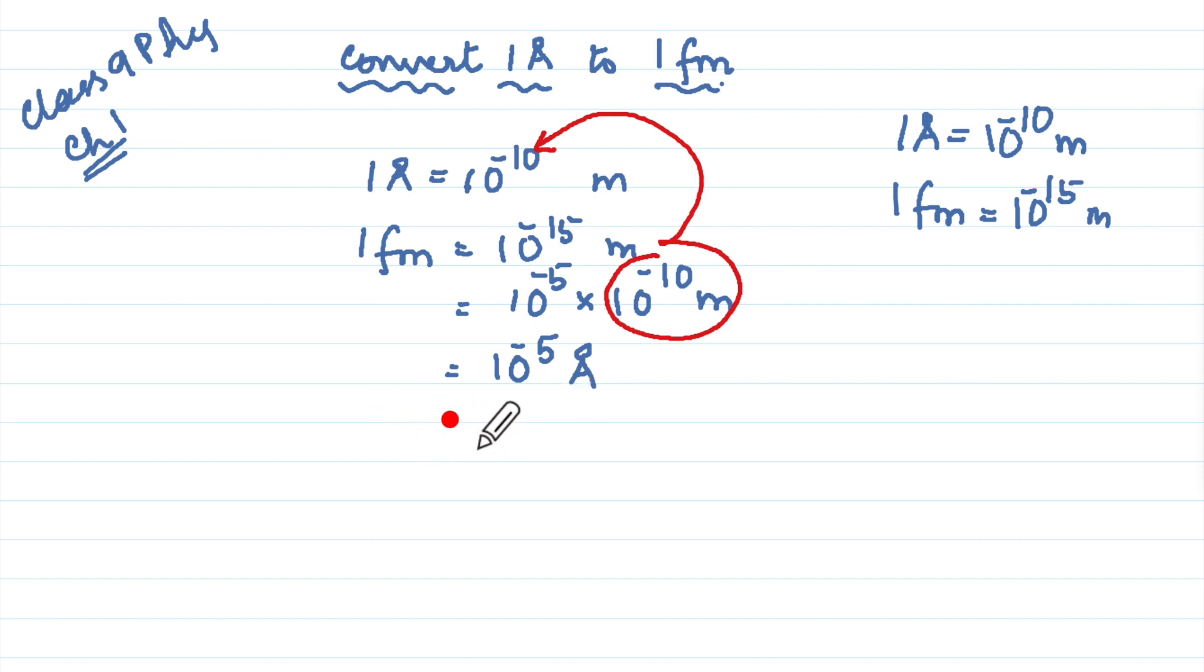Now if they are asking the opposite, which is 1 angstrom unit equals how many femtometers, you can do your thinking step here and work it out. You will say that 1 femtometer is 10 to the power minus 5 angstrom units, and so 1 angstrom unit is equal to how many femtometers? I will write x.